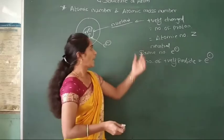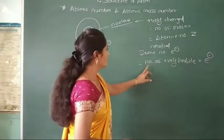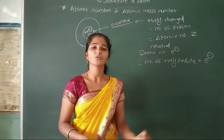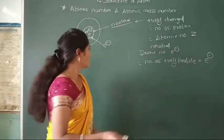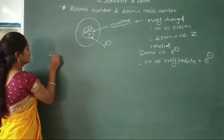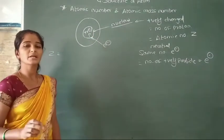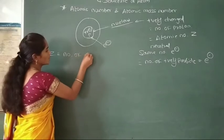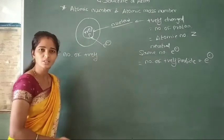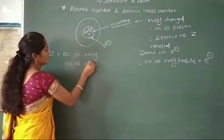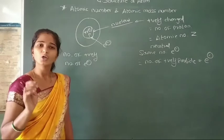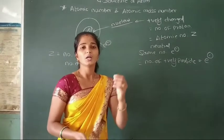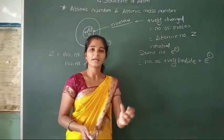That means the atomic number can be calculated from the number of positively charged particles or from the number of electrons around the nucleus. The atomic number, represented by Z, is defined as the number of positively charged particles present inside the nucleus, or the number of electrons present outside the nucleus, or equivalently the number of protons present inside the nucleus.